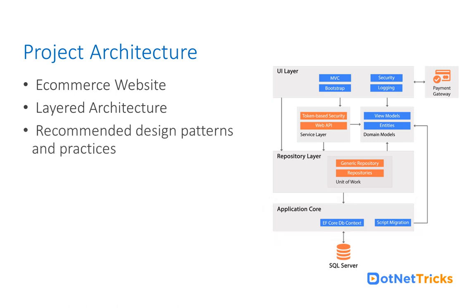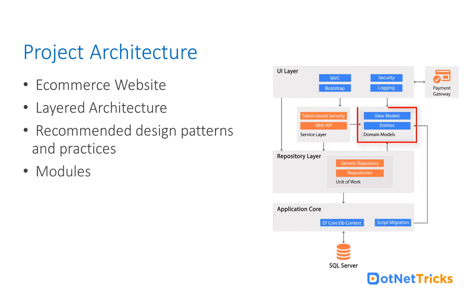In the repository layer, we will follow recommended design patterns and practices, using the Generic Repository and Repository design pattern along with the Unit of Work design pattern. Domain models will be used in the UI layer and repository layer for validation and data transfer, and domain model entities will also be used in the application core layer for defining database constraints and relationships.